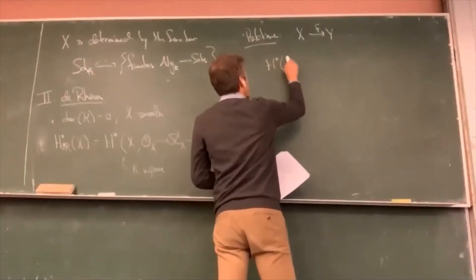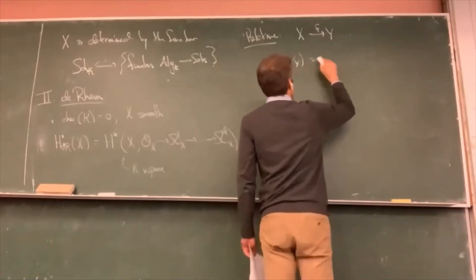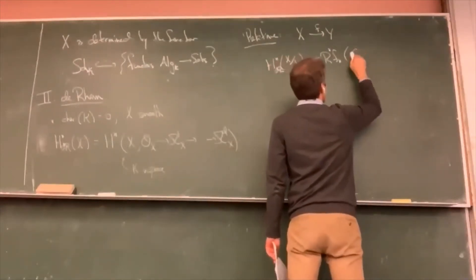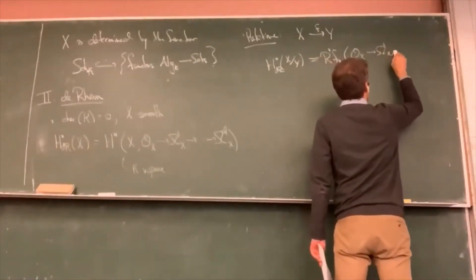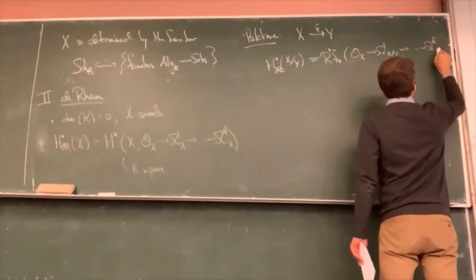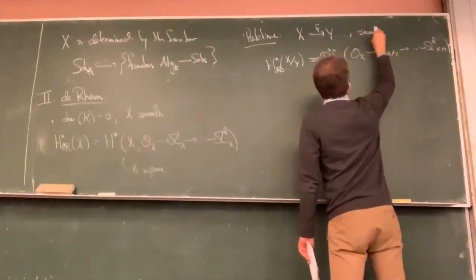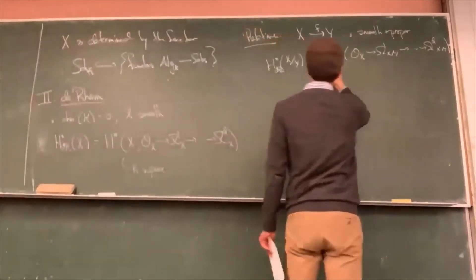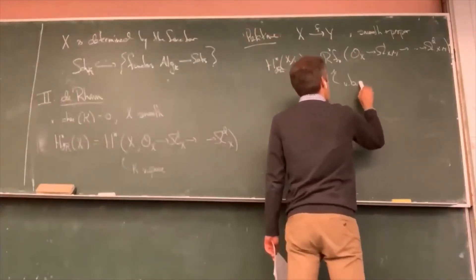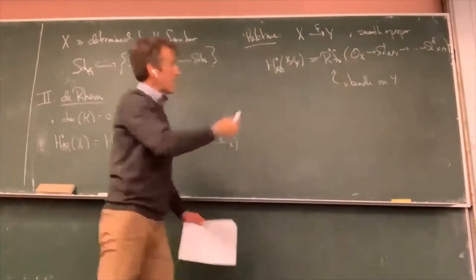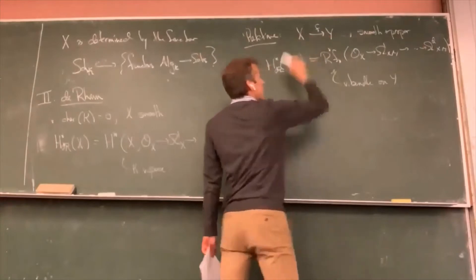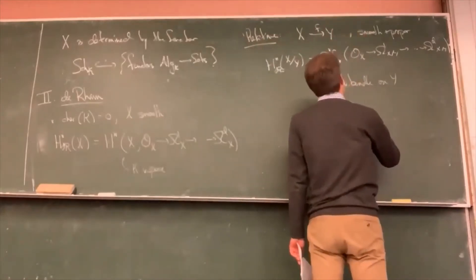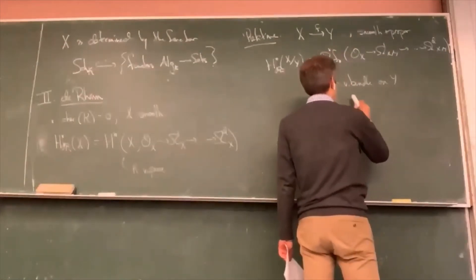This is now a vector bundle on Y. The fiber at a given point is the de Rham cohomology of the corresponding fiber of this morphism over Y. It has an integrable connection called the Gauss-Manin connection. If you have a family of elliptic curves over the modular curve, you get a non-trivial bundle with a non-trivial connection on it — the Picard-Fuchs equation.